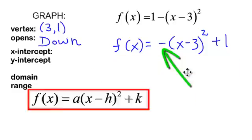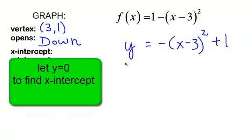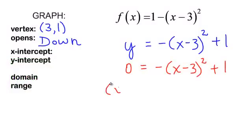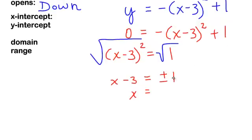This parabola opens down because I have a negative in front for my a. To find the x-intercept I have to use a little algebra. Remember, f of x is the same as y. In order to find my x-intercept, I will let y equal 0. I am going to add x minus 3 squared to both sides. Now I'm going to use the square root property. The 3 is not plus or minus — it's the plus or minus 1.